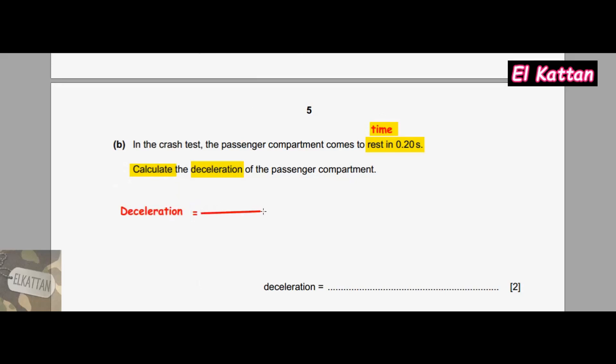Deceleration equals change in velocity or speed divided by the time taken. Final velocity is 0, initial velocity is 20, and the time taken is 0.20. So, 0 minus 20 divided by 0.20 equals 100 m/s².